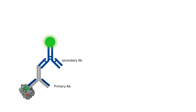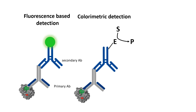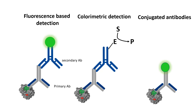Often the secondary antibody is linked with a fluorophore, which allows us to get a fluorescence-based detection. Otherwise, secondary antibodies could also be enzyme-linked, giving us a colorimetric detection. Apart from these variants, there are other ways where primary antibodies themselves are conjugated with a fluorophore or an enzyme.